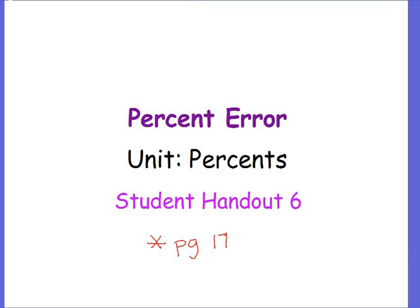Alright, so percent of error is used to find how much someone is off on something, like the amount of money or amount of anything someone is off. Like, if I had a jar of candy — they do this at fairs — and you have to guess how much candy is in the jar, and everybody writes the number down and they figure out the winner by finding everybody's percent of error, unless somebody automatically got everything right, then their percent of error would be zero because they were dead on. So, if you were off, you would have a percent of error.